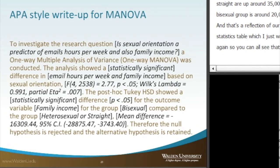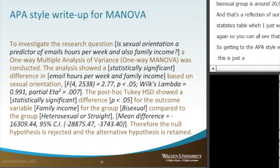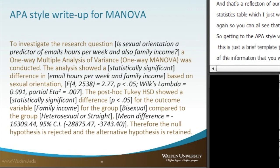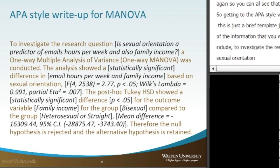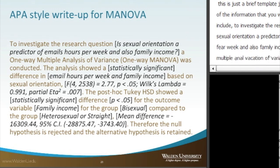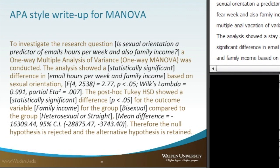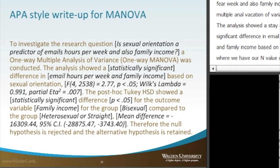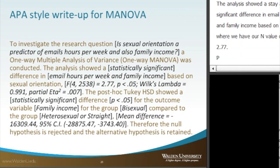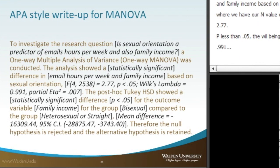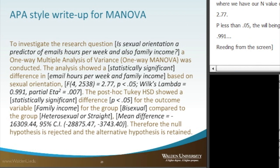For the APA write-up for MANOVA, here is a brief template. To investigate the research question of whether sexual orientation predicts email hours per week and family income, a one-way MANOVA was conducted. The analysis showed a statistically significant difference in email hours per week and family income based on sexual orientation: F(4, 2538) = 2.77, p < 0.05. Wilks' Lambda = 0.991, partial eta squared = 0.007. The post hoc Tukey's HSD showed a statistically significant difference (p < 0.05) for family income between the bisexual group and the heterosexual/straight group.